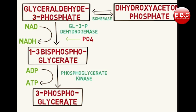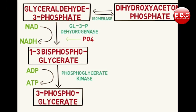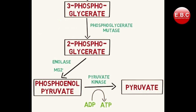1,3-bisphosphoglycerate is converted to 3-phosphoglycerate by the enzyme phosphoglycerate kinase. This kinase transfers the phosphate group from 1,3-bisphosphoglycerate to ADP, generating a molecule of ATP. Next, 3-phosphoglycerate is converted to 2-phosphoglycerate — a simple rearrangement reaction catalyzed by the enzyme phosphoglycerate mutase. Then, 2-phosphoglycerate is converted to phosphoenolpyruvate by the enzyme enolase, and magnesium ions are also utilized in this reaction.